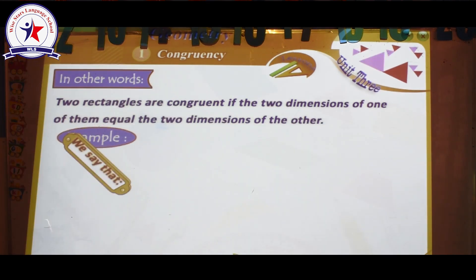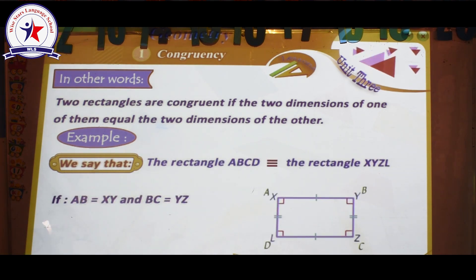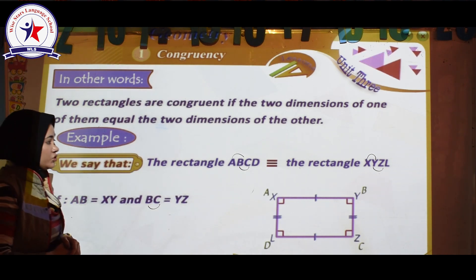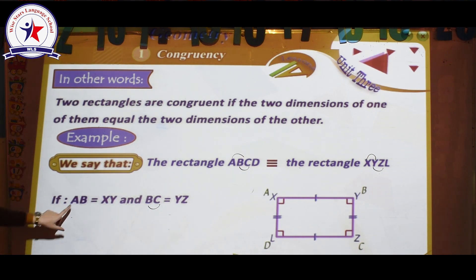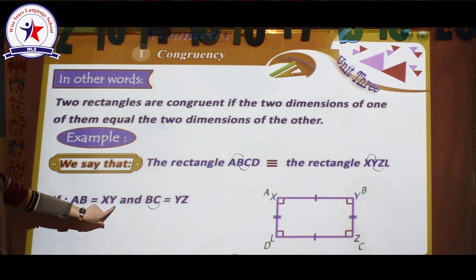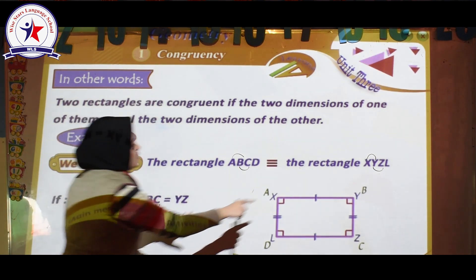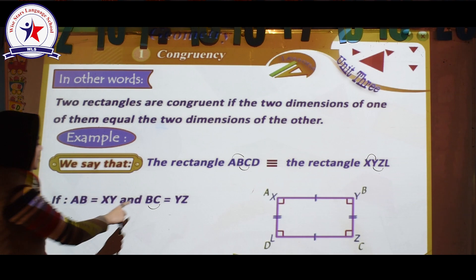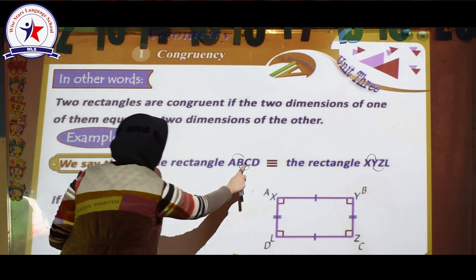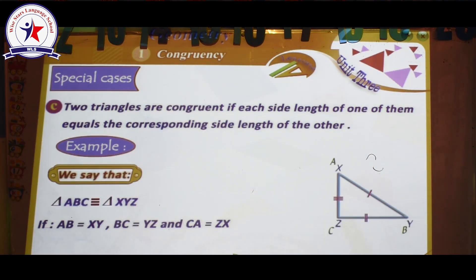Two rectangles are congruent if the two dimensions of one of them equal the two dimensions of the other. We say that rectangle ABCD is congruent to rectangle XYZL if AB equals XY and BC equals YZ.